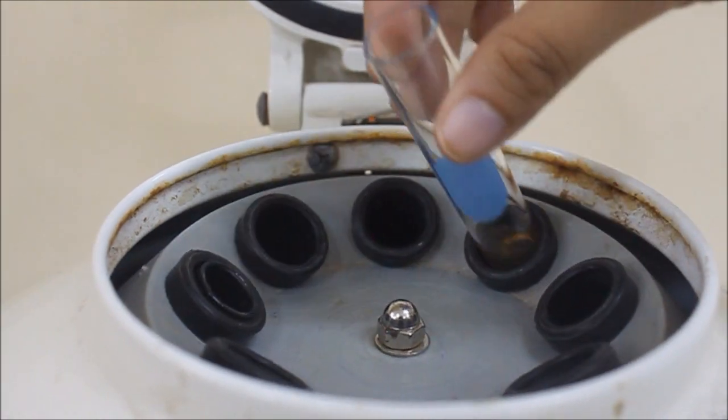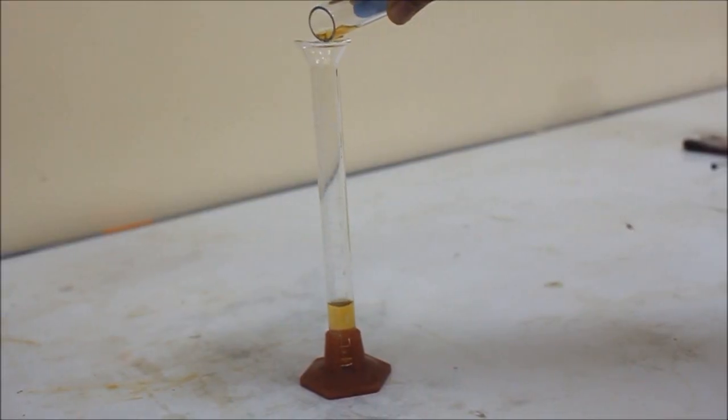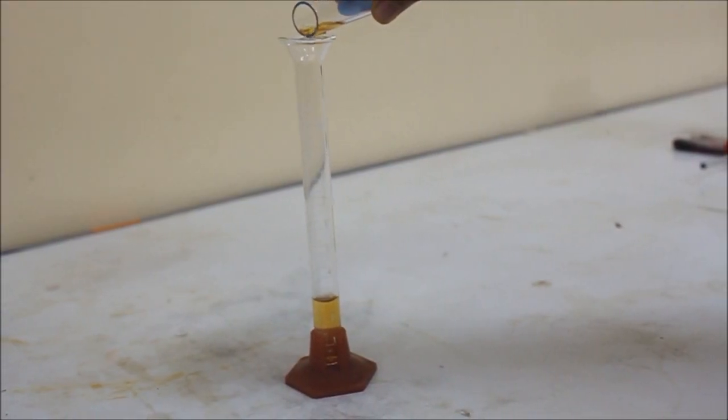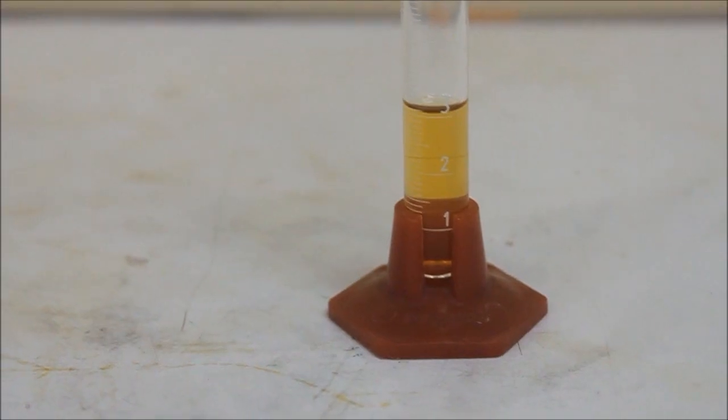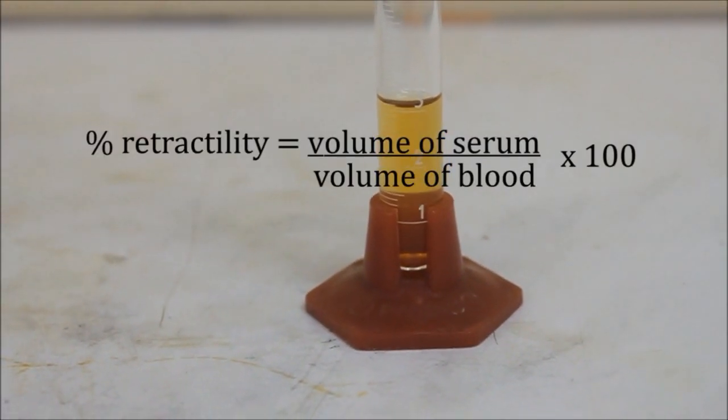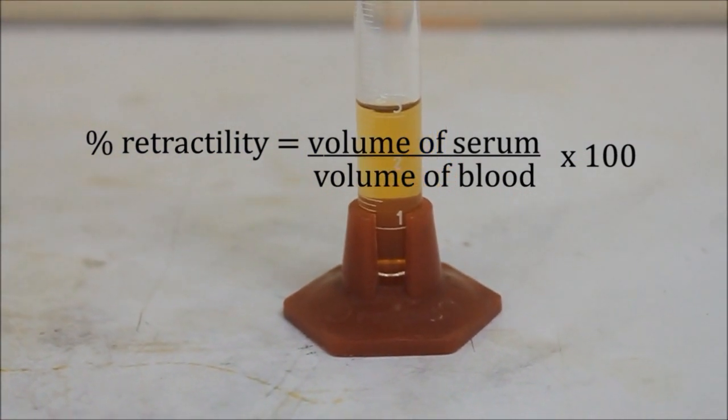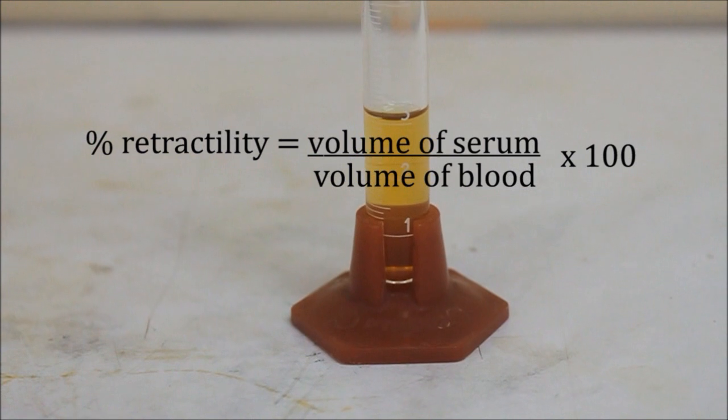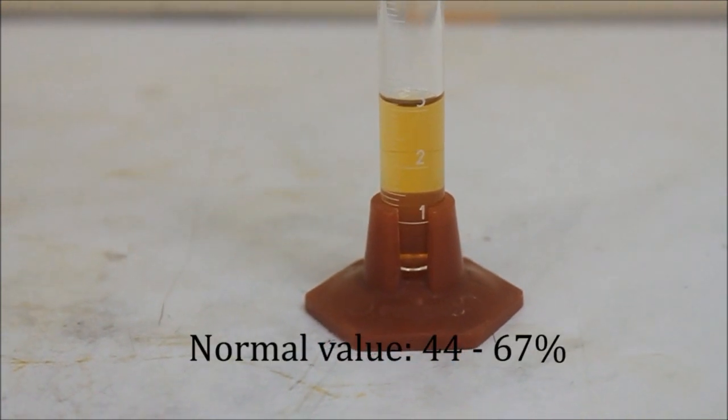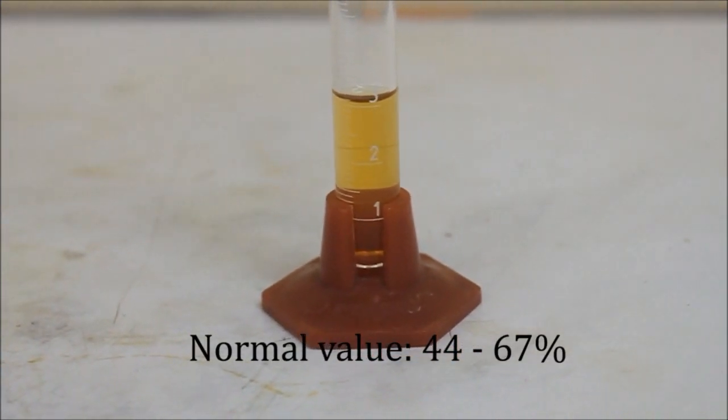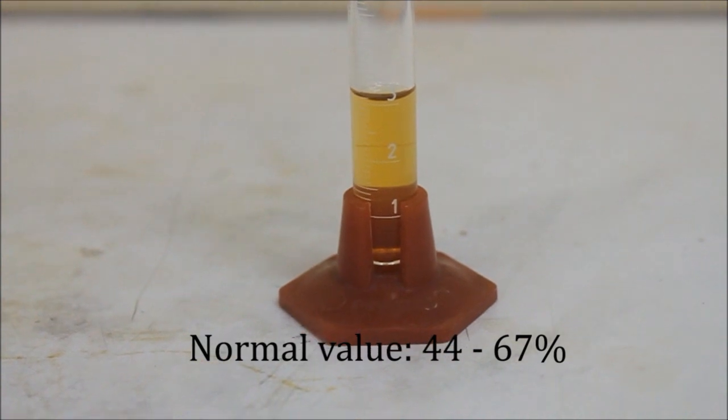Measure the volume of the serum yielded. Compute for the percent retractility of the sample using the formula: percent retractility equals volume of serum divided by the volume of the blood used times 100. The normal value for the McFarland modification is 44 to 67 percent.